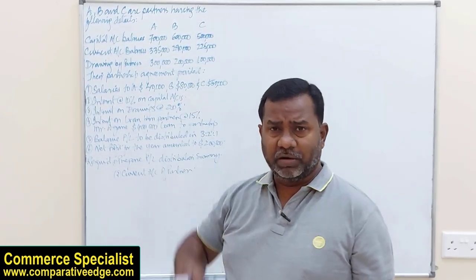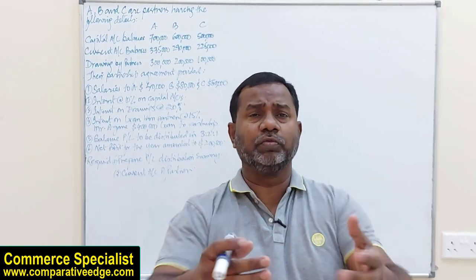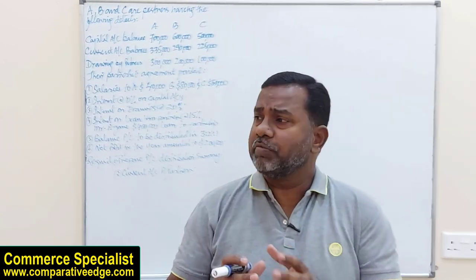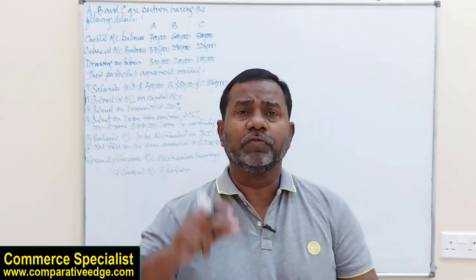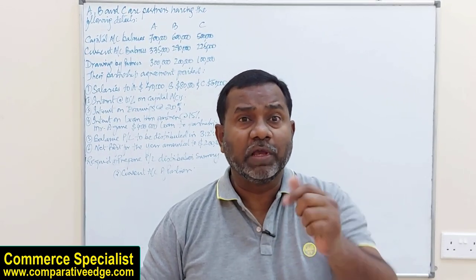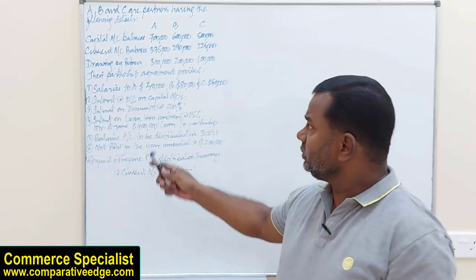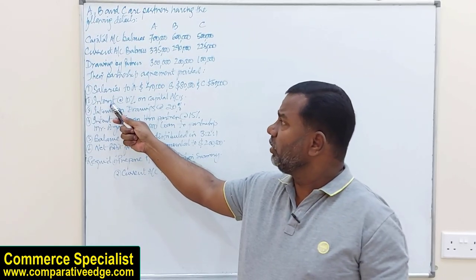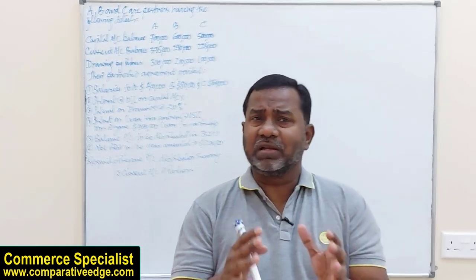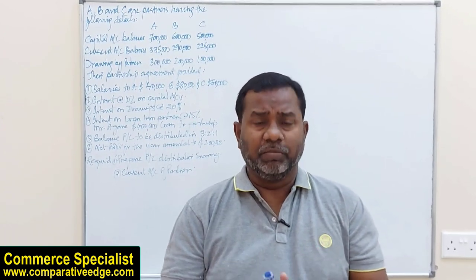Interest on capital works like this: if I have a lot of money to invest and you're running a partnership wanting me to join, my argument would be — if I invest in a bank I get 10%, so if I invest with you in your partnership, how much return do I get on my investment? That's interest on capital. Partners may be allowed interest at 10% on their capital account balances.